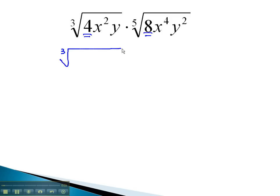We now have the third root of 4, which factors to 2 squared, x squared y. And we also have a fifth root of 8, which factors to 2 cubed, x to the 4th, y squared.